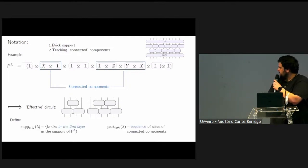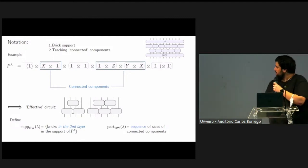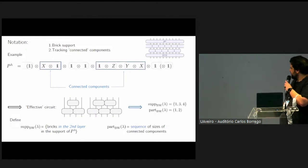This circuit is characterized by two quantities that we introduce. The first one is a notion of support, which is just the set of bricks in the second layer in the support of the Pauli string we are considering. Secondly, we need to keep track of these connected components, which is done by what we call the partition of the circuit. What we store is a sequence of the lengths of the connected components, and here we have the values associated to the circuit we are considering.